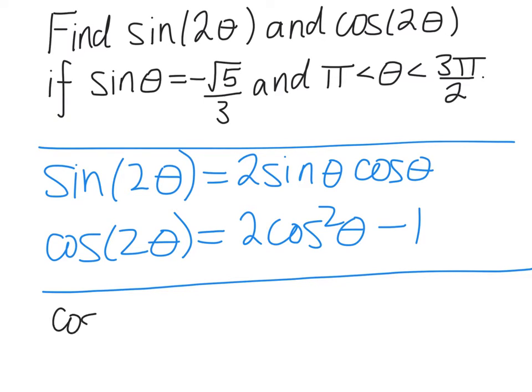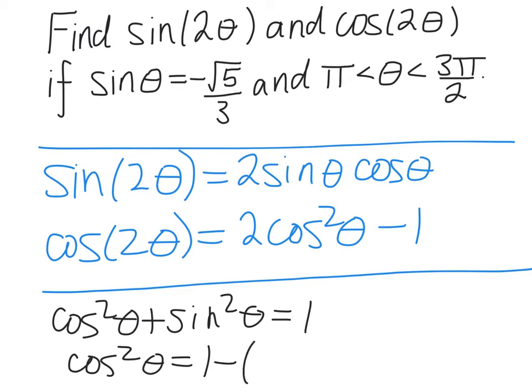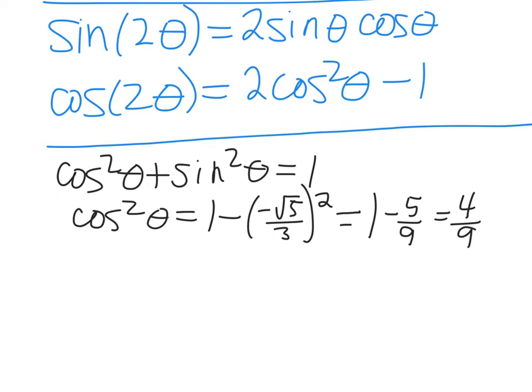Now I know that cos²θ plus sin²θ is equal to 1, so that means that cos²θ is 1 minus sin²θ, which is 1 minus (−√5/3)², which is equal to 1 minus 5 ninths, which is 4 ninths. So that tells me that cos²θ is 4 ninths, so cosθ must be plus or minus the square root of 4 over 9, which is plus or minus 2 thirds.